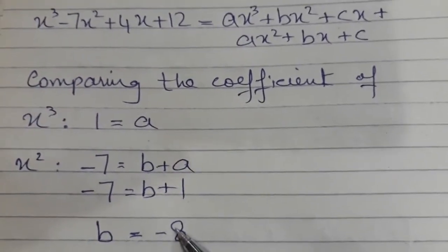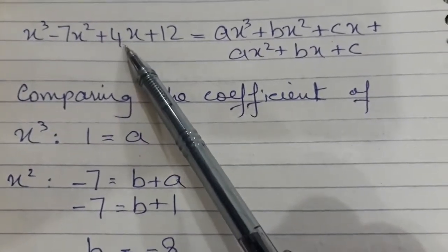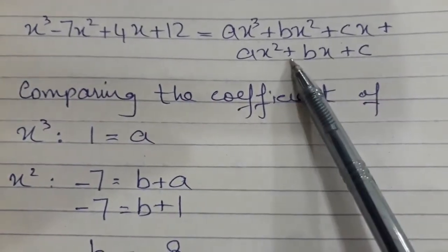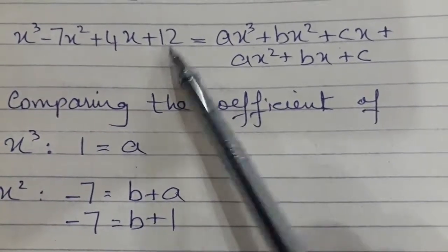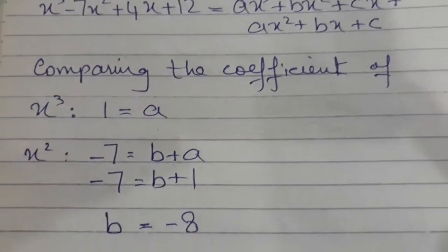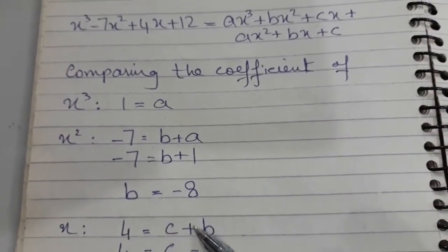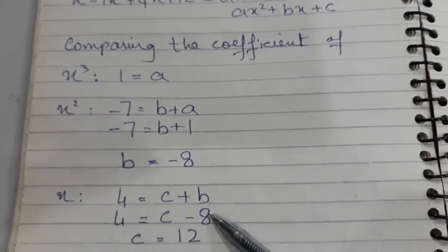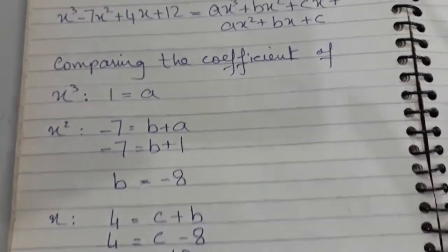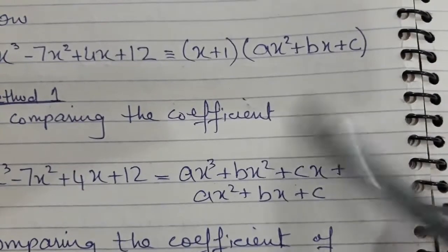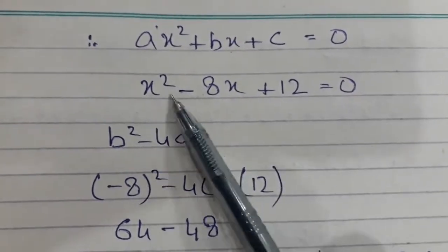To find c we have two options: compare the coefficient of x, giving 4 = c + b, or compare the constant term directly, giving 12 = c. Both should give the same answer. Since b = minus 8, from 4 = c + b we get c = 12. We now have a, b, and c, and can plug them into the quadratic factor.